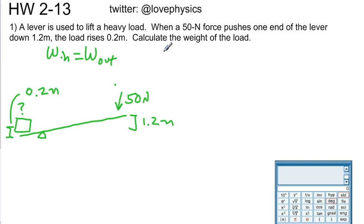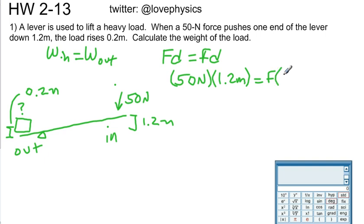So work in, work out is equal to force times distance in, force times distance out. Simply substituting, this is what you put in, and this is what you get out. So the force times the distance is simply 50 Newtons times 1.2 meters. And what you got out was an unknown force, which is the weight of the object, and a certain distance, which is 0.2 meters.